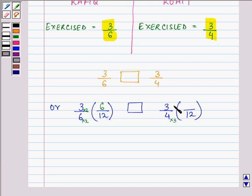Whereas 4 multiplied by 3 is 12. Therefore 3 multiplied by 3 will be 9. Since we are multiplying the denominator by 3, we need to multiply the numerator also by the same number.